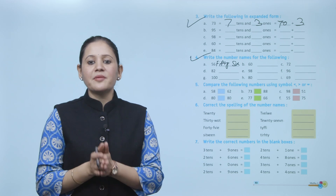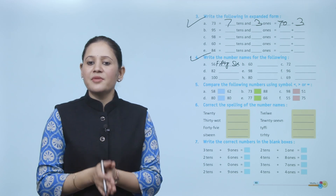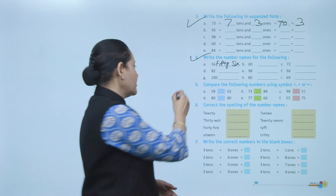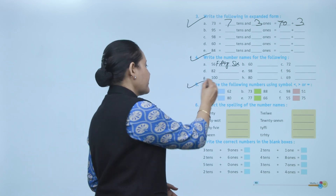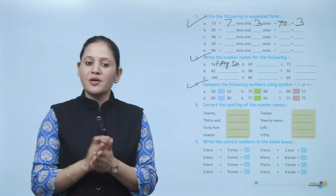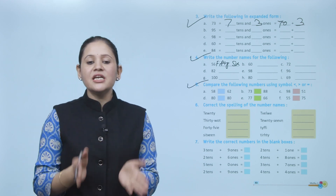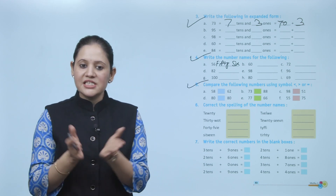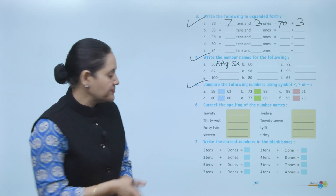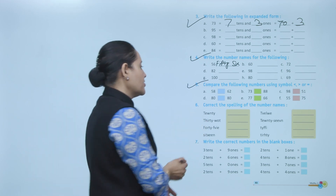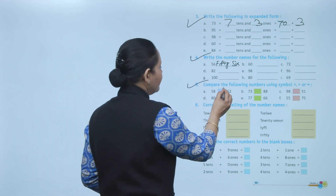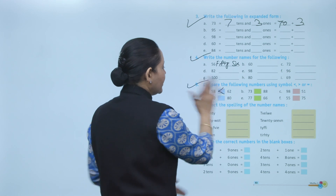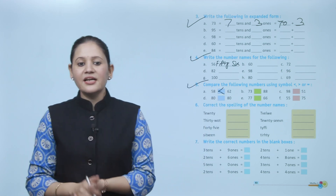Next, compare the following numbers using the symbols less than, greater than, or equal to. Here we compare 58 and 62. Obviously 62 is greater than 58, so we place the greater-than symbol with the open side toward 62 and the pointed side toward 58.